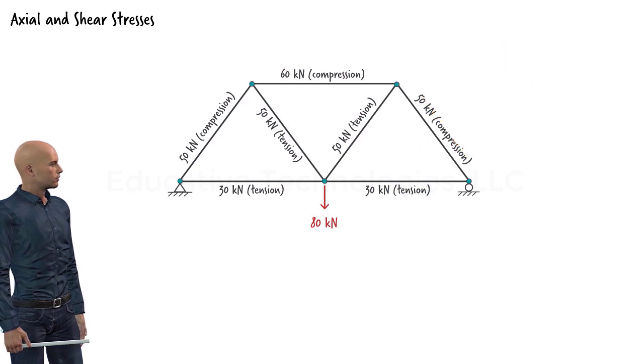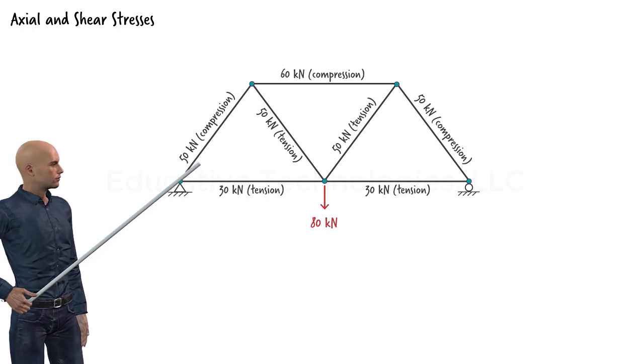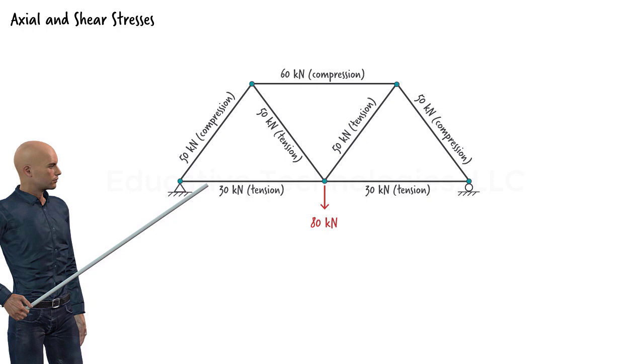From engineering statics, we know that each truss member carries a tensile or compressive force. For example, this member is being compressed by an axial force of 50 kN while this one is being stretched by a force of 30 kN.